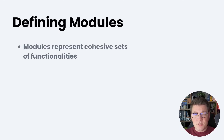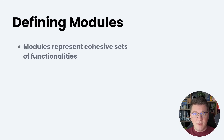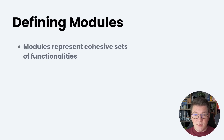What a module basically represents is a cohesive set of functionalities. Cohesive means that they are related together. Going back to our diagram, everything related to the users and the followers has high cohesion, so we're going to place them together. Use cases related to activities and workouts also have high cohesion, so I decided to organize them into a separate module.